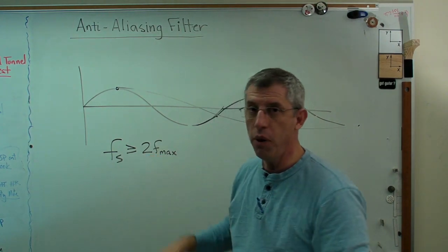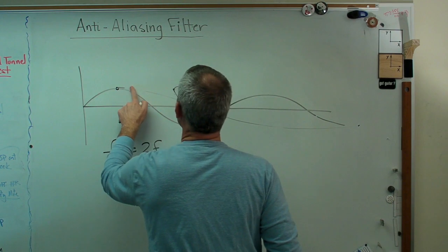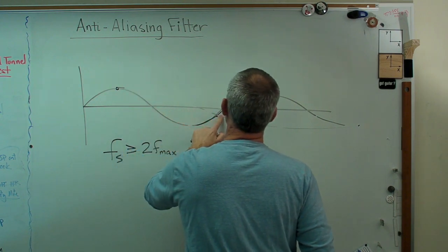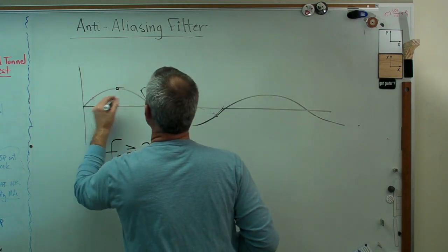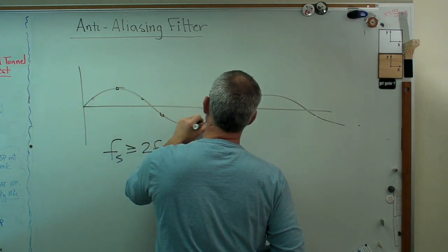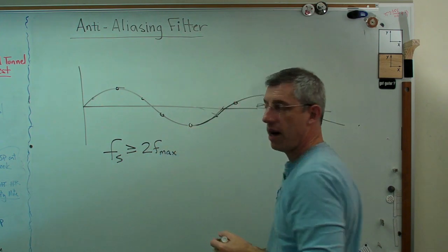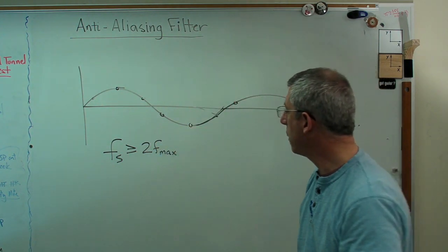When I say greater than or equal to, it would be really good if you used a lot more than two points per cycle. It makes things a lot easier. If I really oversample and do something like this, it's obvious. There's no way to mess this up.